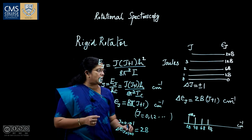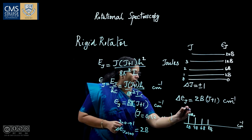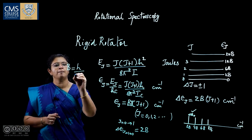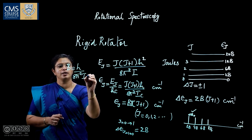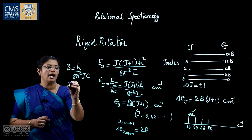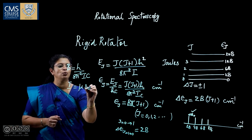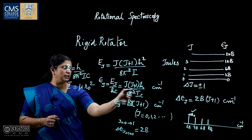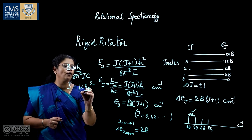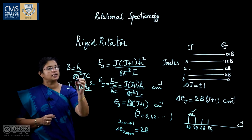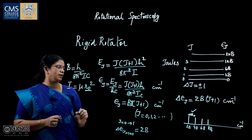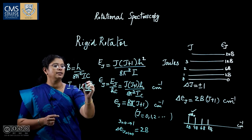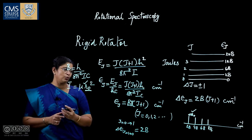By observing the rotational spectra, we can determine the rotational constant B, where B equals h/(8π²Ic). From B, we can calculate the moment of inertia I, and since I equals μR0², where μ is the reduced mass and R0 is the bond length, we can determine the bond length. For a rigid rotator, R0 is assumed constant. So from the spectral line we are effectively measuring the bond length, which gives the strength of the bond.